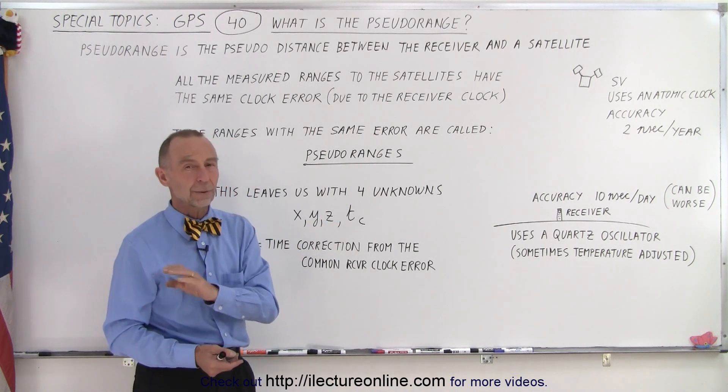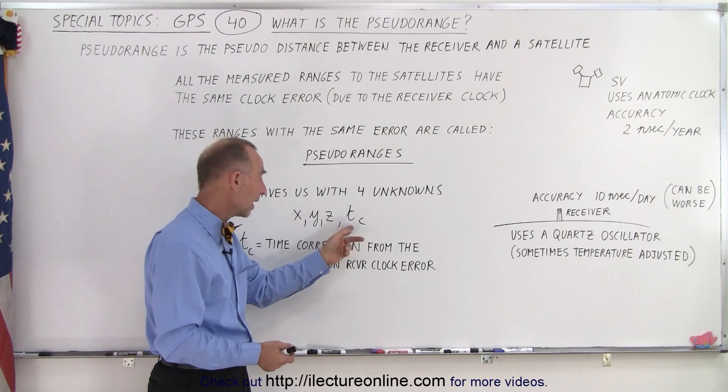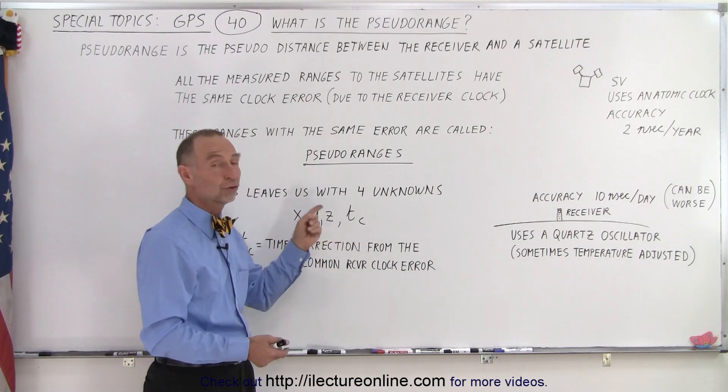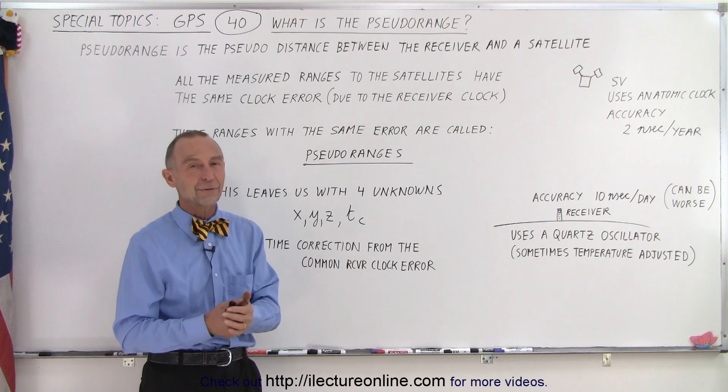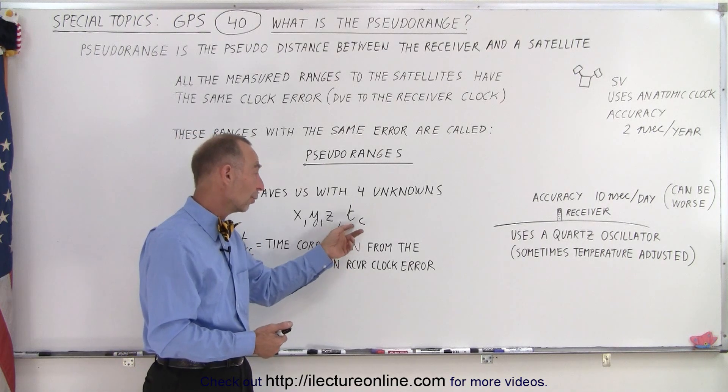We can then incorporate the error, and then instead of having a pseudo position for the receiver, we can then have a much more exact position once we also know the error, the clock error in the receiver.